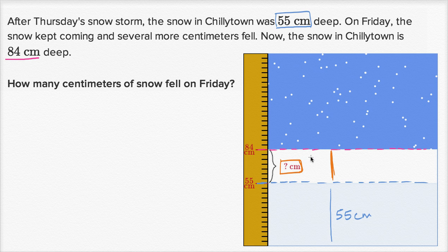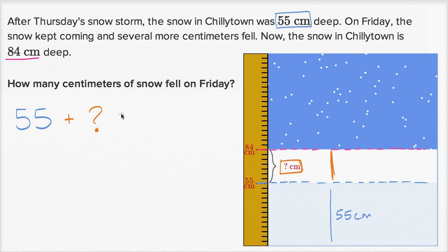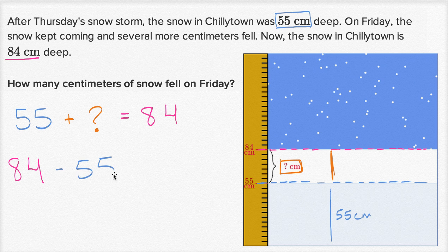So how do we figure that out? Let's write some things we know are true. We know that 55 centimeters — how many there were after Thursday's snowstorm — plus however many centimeters fell on Friday, which we don't know, so I'll write a question mark, is going to equal the total: 84 centimeters. If 55 plus question mark equals 84, then 84 minus 55 equals the question mark.